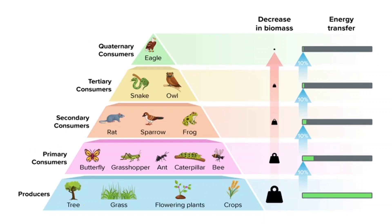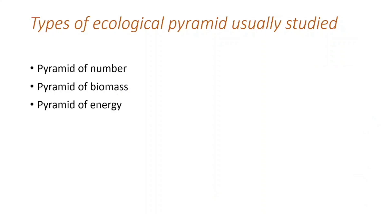For example: grass eaten by butterfly, rat, snake, eagle; or grass eaten by grasshopper, sparrow, owl, then eagle. The number of organisms is greater at the base than at the top. Energy always transfers from producers to consumers. So the ecological pyramid is of three types: pyramid of number, pyramid of biomass, and pyramid of energy.